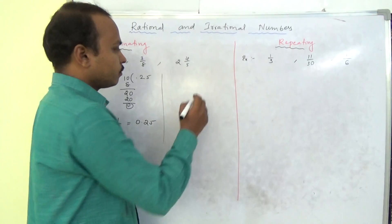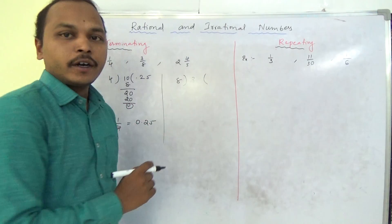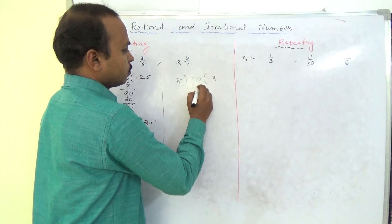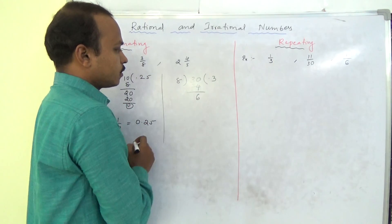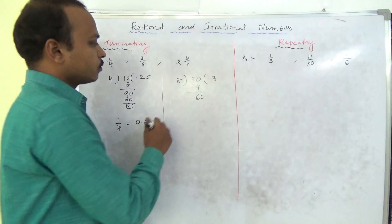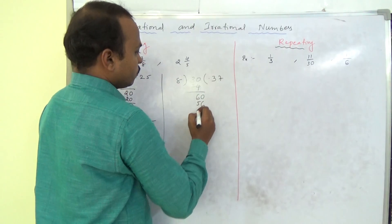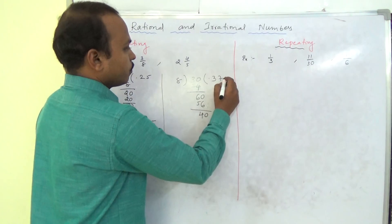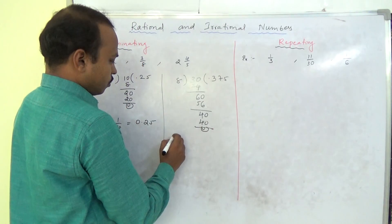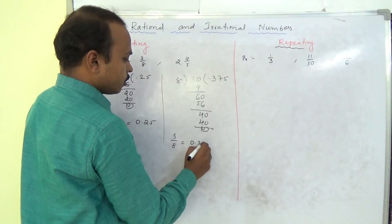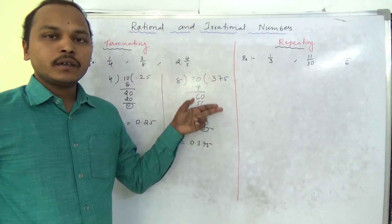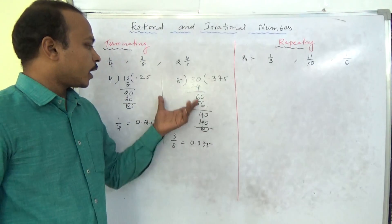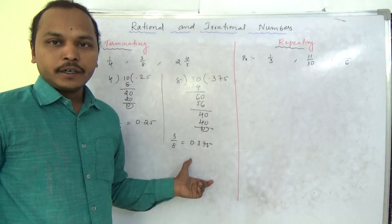Similarly, 3 by 8. Doing 3 divided by 8: keep 0 and the decimal point. 8 into 3 gives 24, remainder 6. Bring down 0; 8 into 7 is 56, remainder 4. Bring down 0; 8 into 5 is 40, remainder 0. So 3 by 8 equals 0.375. After certain repeated divisions they stop — that means they terminate.